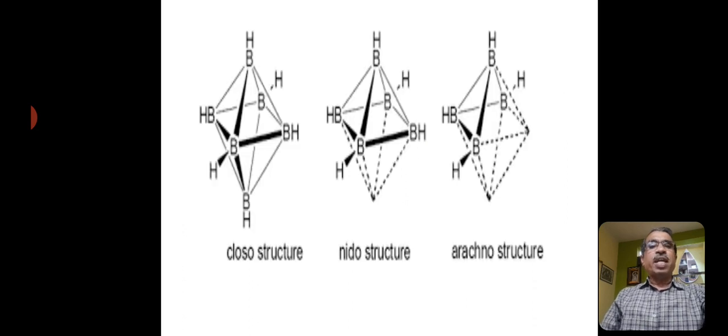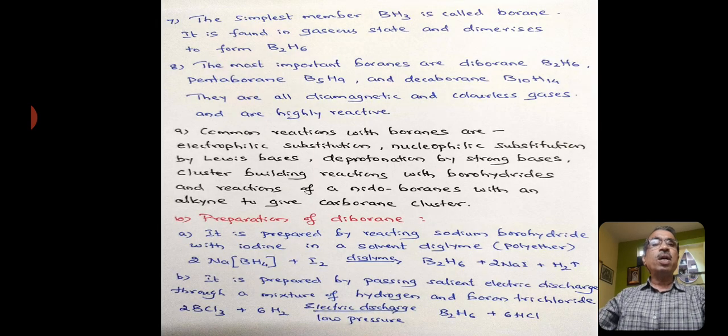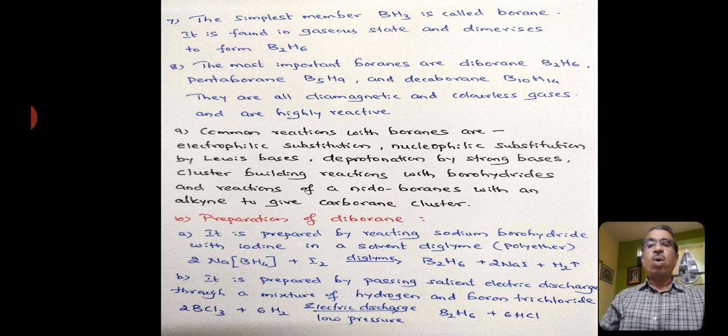As I have said, the boranes have two types, the neidostructure and arachnostructures and closostructures. In case of the closostructures, all the corners have the boron atom and hydrogen is attached to this. In case of neidostructure, one of the corners is vacant, and in case of arachnostructure, the two corners are vacant.